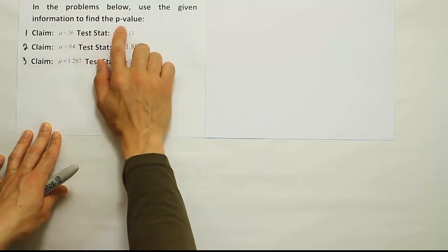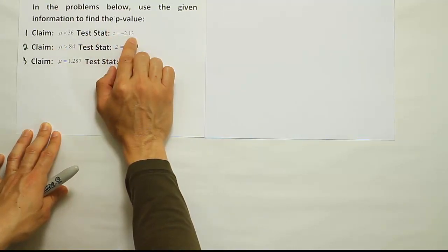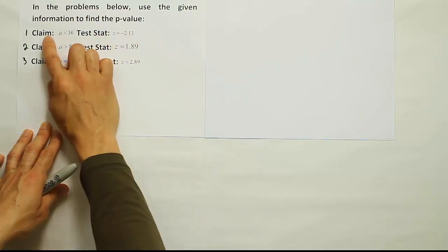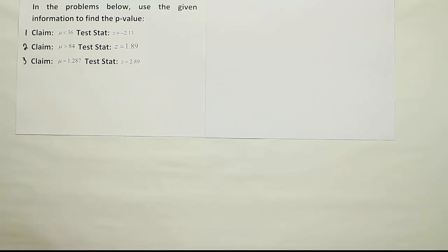To find the p-value in a problem, you must be given the test stat and the alternative hypothesis. They didn't give us the alternative hypothesis, but they have given us the claim, and from the claim we can figure out what HA is. Let's start with that first one, number one.